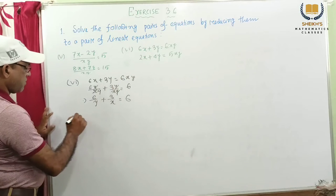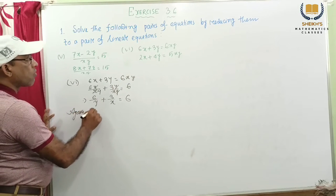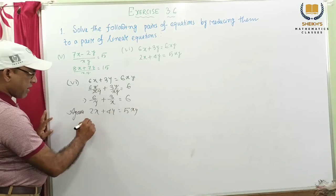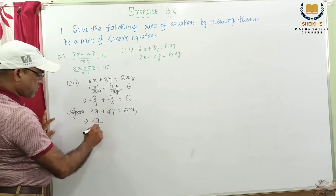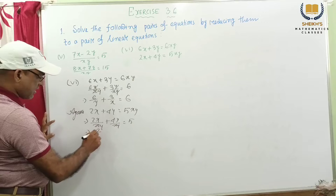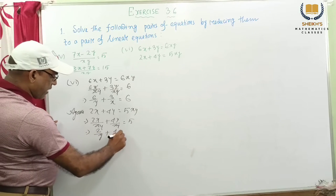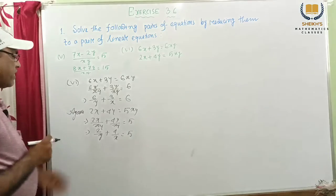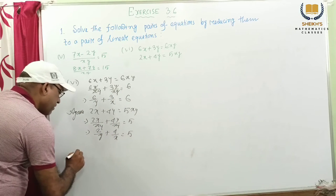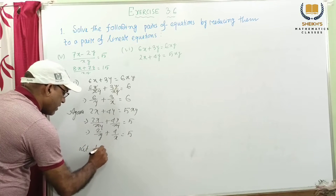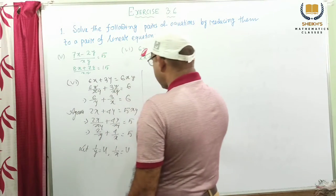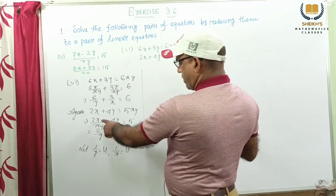Again next equation: 2x plus 4y equal to 5xy. Again, dividing both sides by xy. This implies 2x by xy plus 4y by xy equal to 5. So x is cancelled: 2 by y plus 4 by x equal to 5. So we get 6 by y, 3 by x, and 2 by y, 4 by x. So putting, or let 1 by y equal to u, 1 by x equal to v.